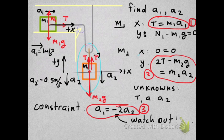So the constraint equation, as I said, should be A1 equals minus 2A2. So now we have three equations and three unknowns: the tension, acceleration 1, and acceleration 2. So we can solve the system.